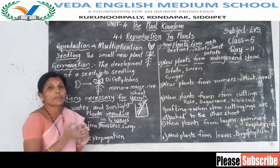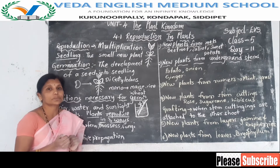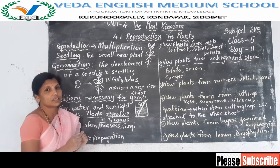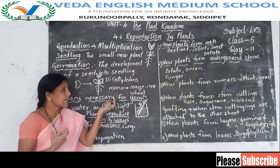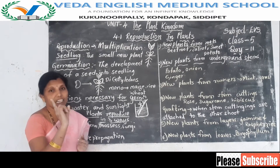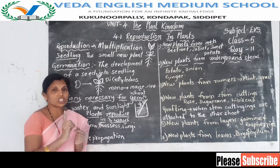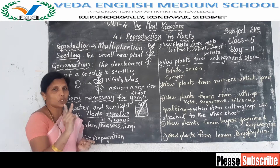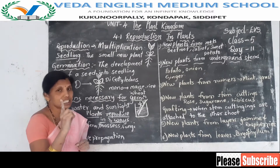Examples of dicotyledons are red gram, black gram, pea, green gram, and coriander. Examples of monocotyledons are maize, rice, and wheat — they have only one seedling. Dicotyledons means seeds which have two seedlings; monocotyledons means seeds with only one seedling.